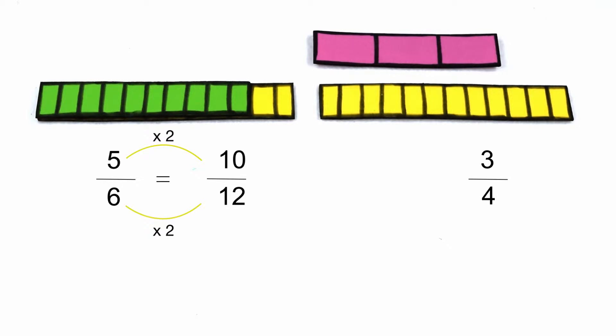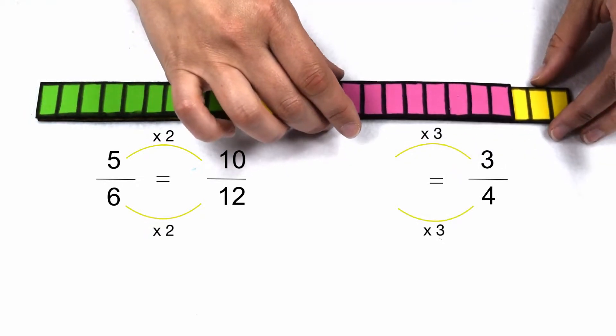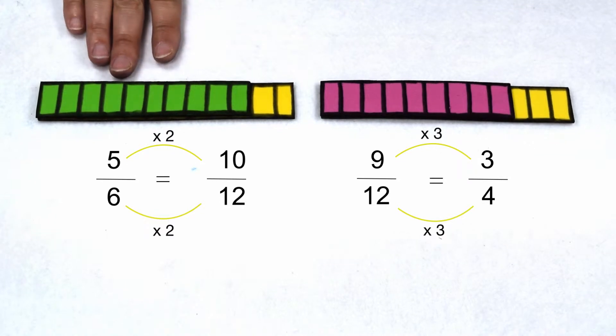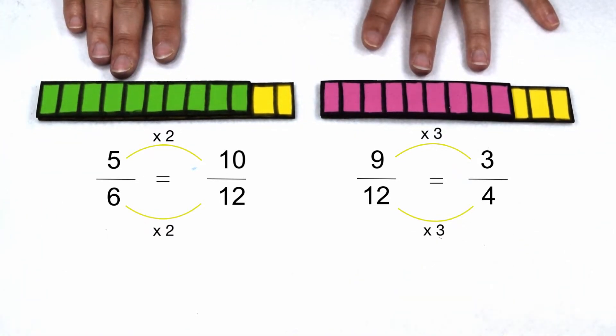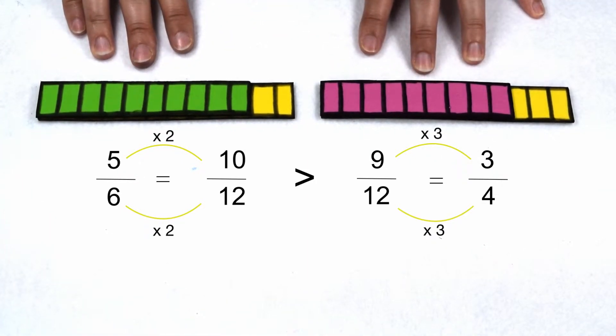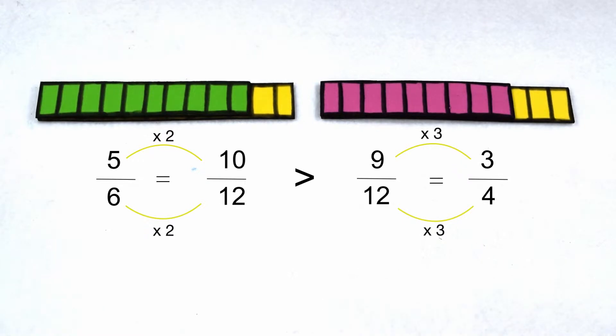For 3 fourths, I multiply 4 times 3 to give me 12, so that means I need to multiply 3 by 3 as well. 3 times 3 gives me 9, so 3 fourths becomes 9 twelfths. So now I'm comparing 10 twelfths to 9 twelfths. Like we saw originally on our fraction bars, they're very close in value. But 10 pieces is slightly greater than 9 pieces, so going back to our original fractions, 5/6 is going to be greater than 3 fourths.